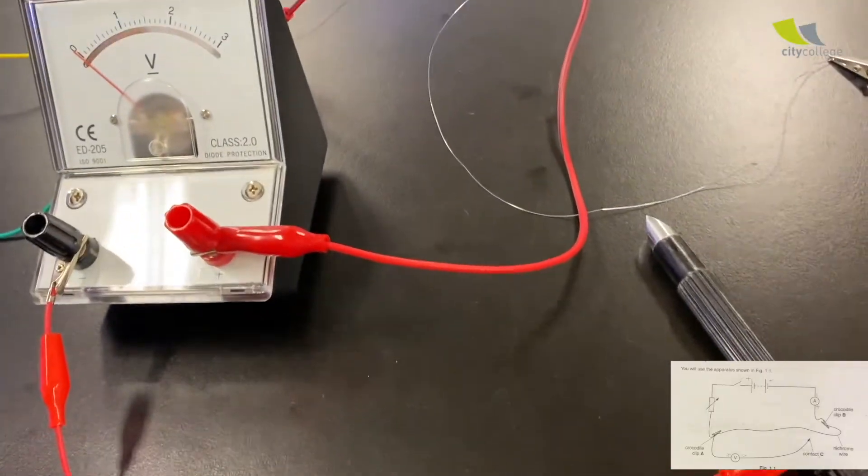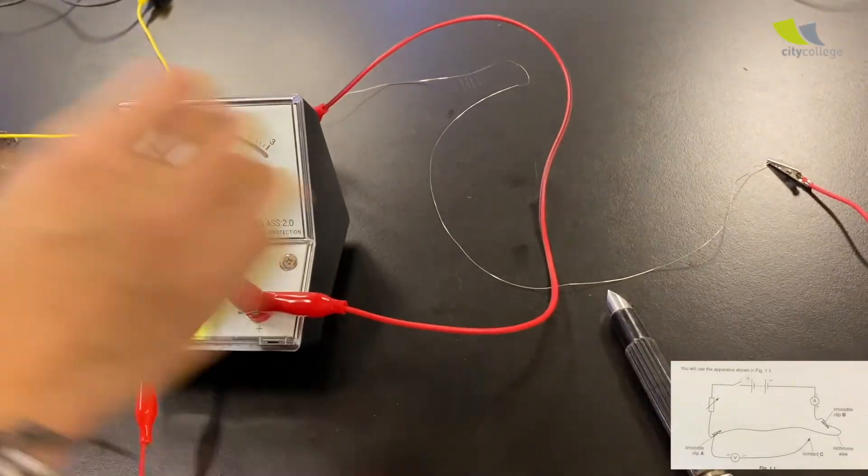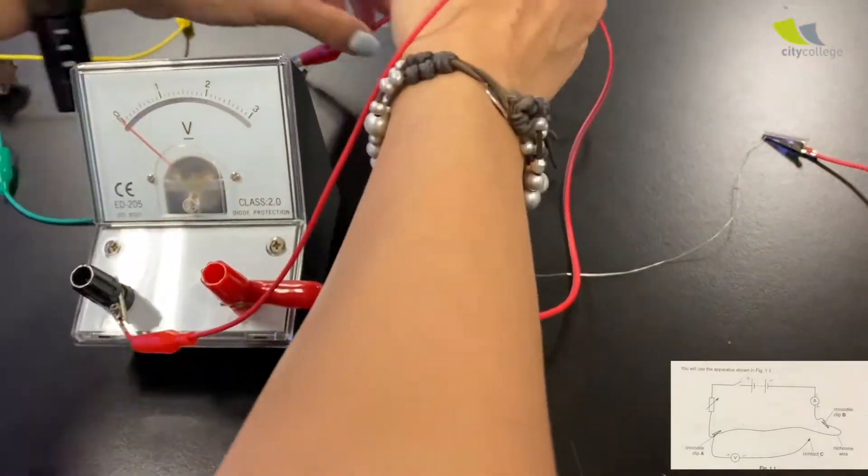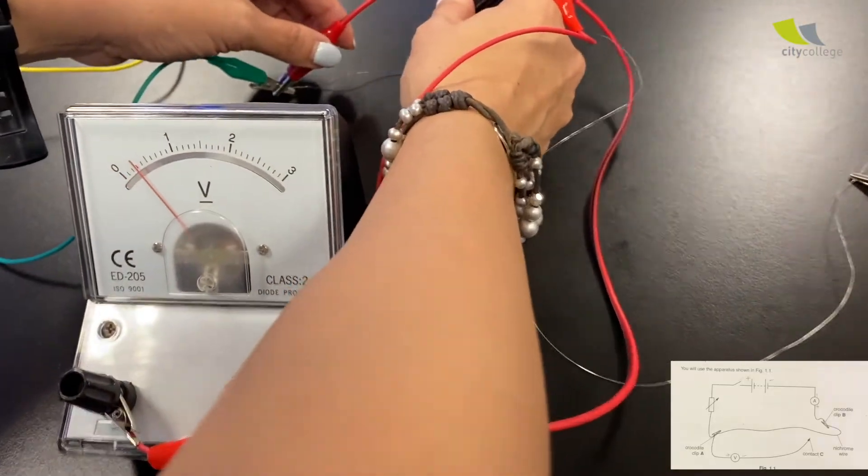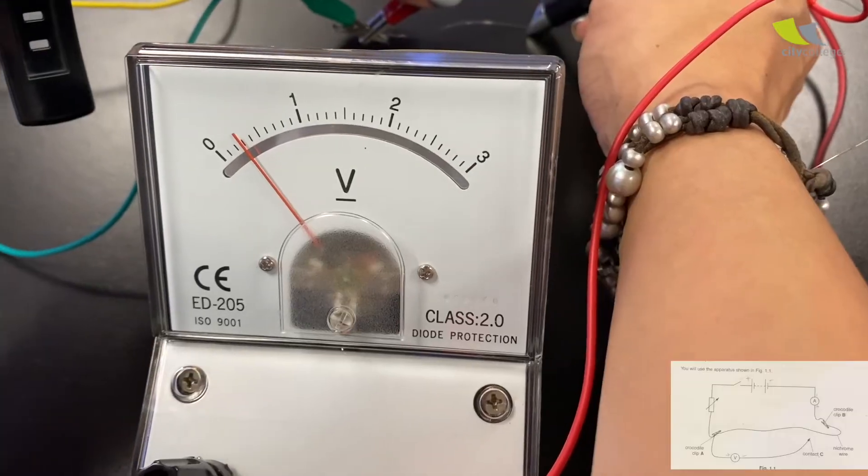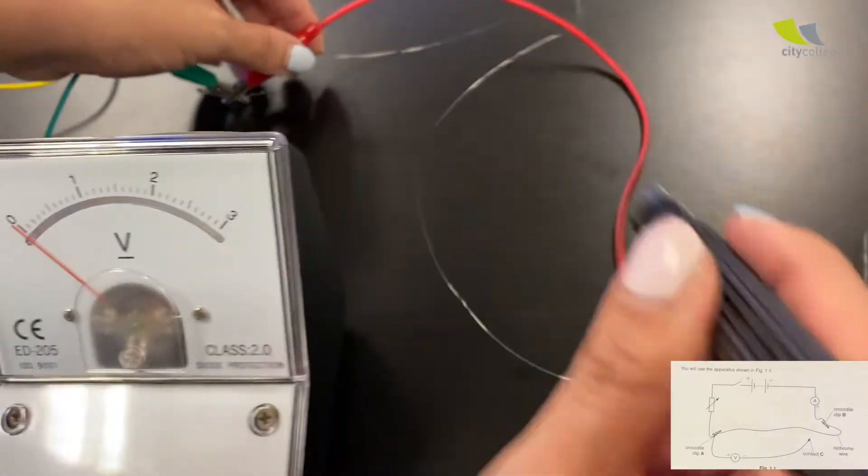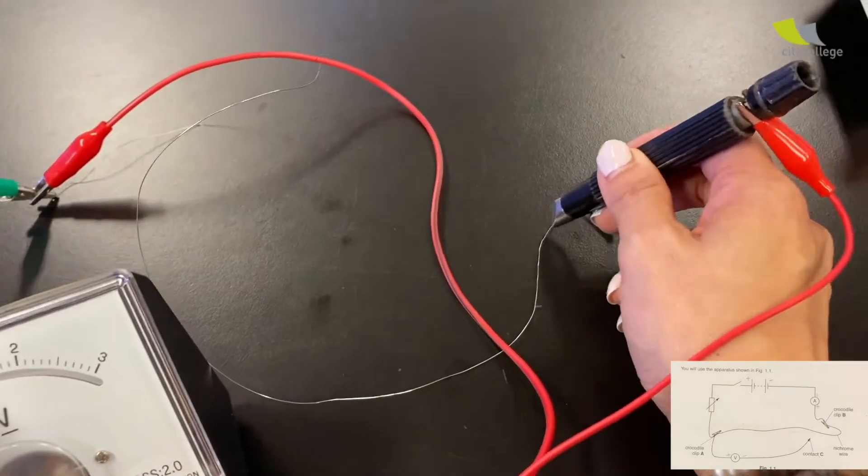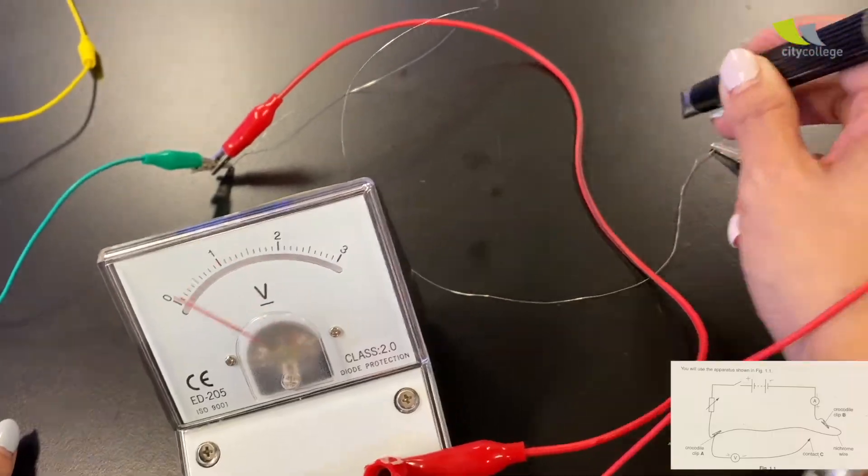As she contacts on the wire. So there's a reading on the ammeter. Alright. So she's going to place the jockey on some part of the nichrome wire. Just touch any part. So you see? There's a reading. Alright. Touch it further. Somewhere further. All the way. Let's say the full length of the wire. Voila. Alright. So it's done.